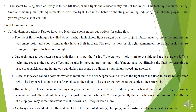Field Demonstration. A field demonstration at Raptor Recovery, Nebraska, shows numerous options for using flash. The worst flash technique is called direct flash, which shoots light straight at the subject. Unfortunately, this is the only option with many point-and-shoot cameras that have a built-in flash. The result is very harsh light — remember, the further back you are from your subject, the harsher the light. One technique to get better results with flash is to get the flash off the camera. Hold it off to the side and use a sync cord. This technique reduces the red-eye effect and results in more natural-looking light.